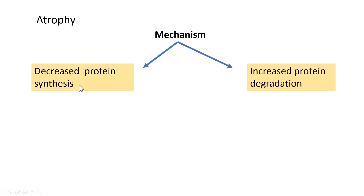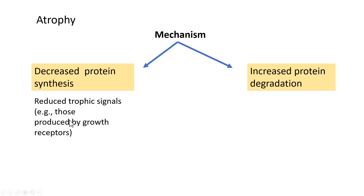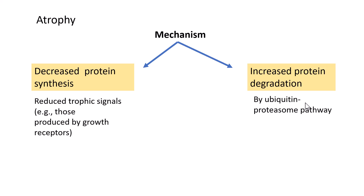What are the mechanisms for atrophy? Why does the muscle or organ get shrunken in size with a reduction in cell numbers? The reason is: one, decreased protein synthesis — basically because of reduction in trophic signals, for example those produced by growth receptors; and two, increased protein degradation by the ubiquitin-proteasome pathway. Whenever there is increased degradation of proteins, there will be atrophy of the given tissue or organ.